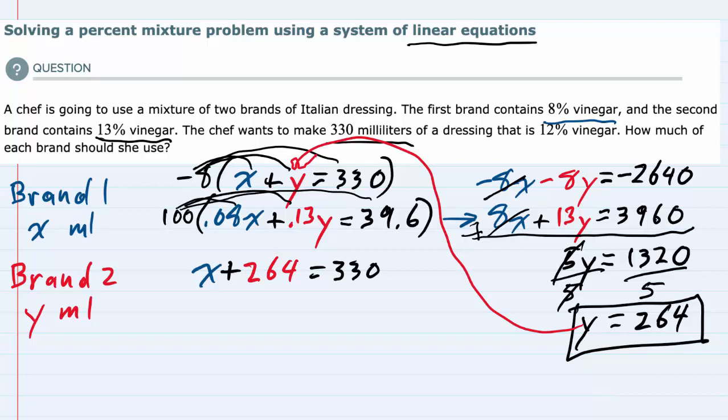To solve for x, I subtract 264 from both sides, leaving x = 66. So the chef should use 66 milliliters of brand one and 264 milliliters of brand two.